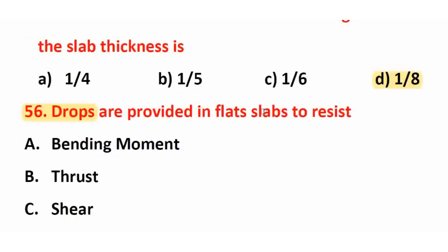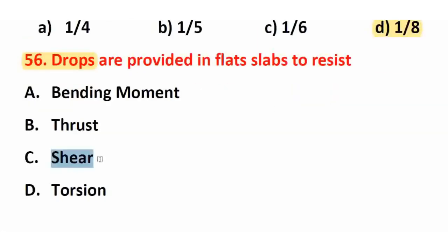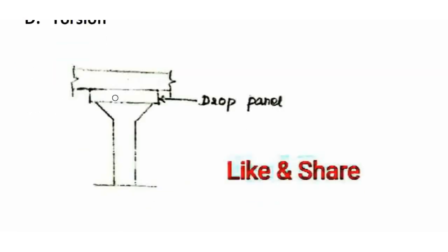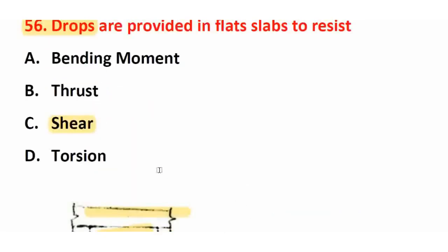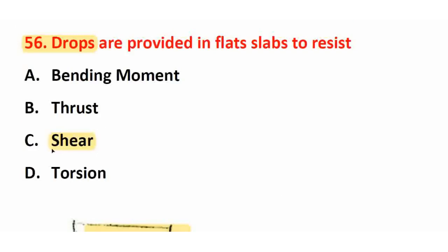Next question: Drops are provided in flat slabs to resist? The right answer is option C — shear (punching shear). Flat slabs transfer load directly to columns without beams. Drop panels are provided at the column-slab joint to increase the shear capacity. So the right answer is C — shear (punching shear).